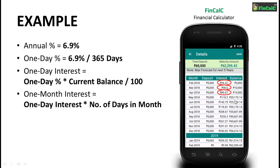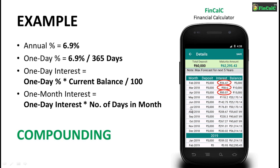There is a very important part in this recurring deposit calculation process. We have something called compounding, which is done every quarter, i.e., every 3 months. So after 3 months of the recurring deposit, the interest earned on the previous months will be added to the total balance of the recurring deposit.